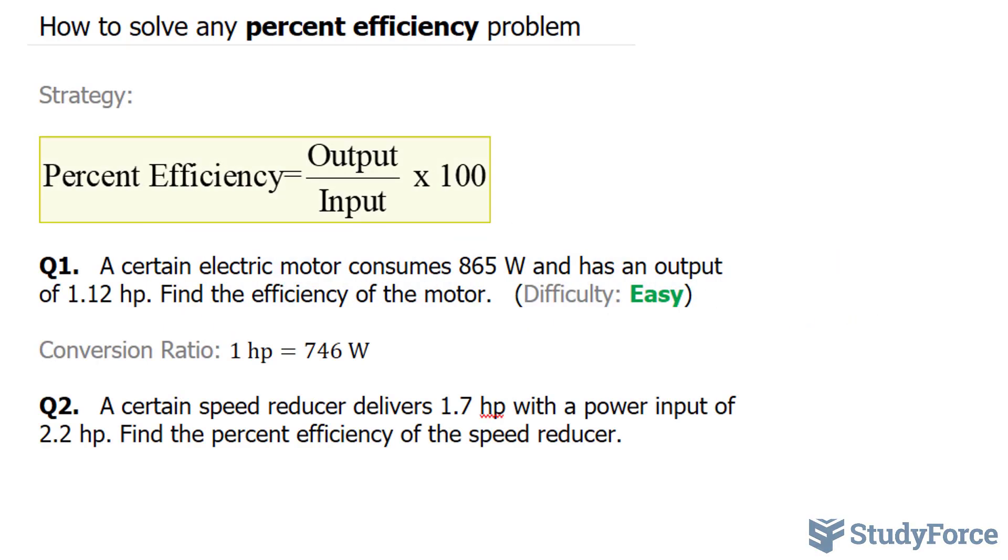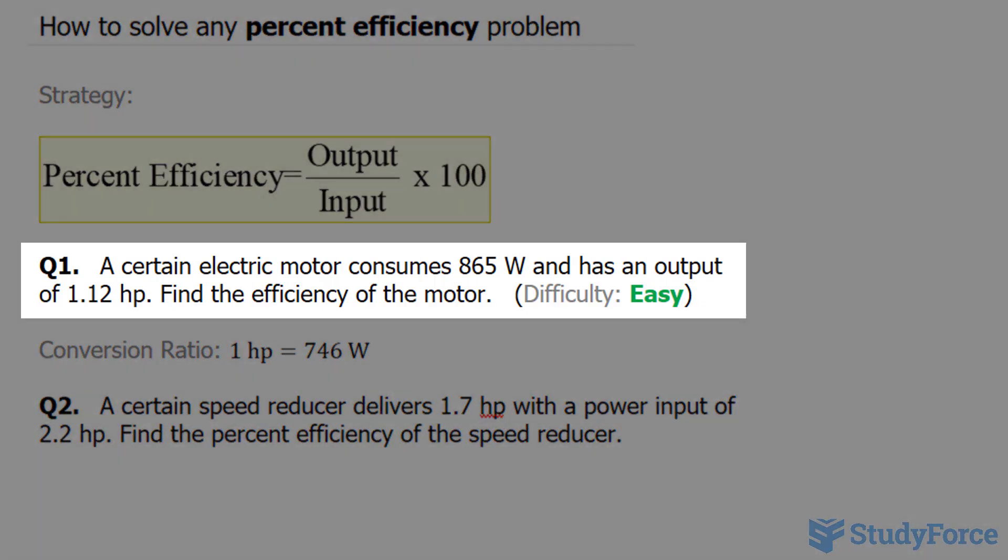In this video, I'll show you how to solve any percent efficiency problem. The first question asks: a certain electric motor consumes 865 watts and has an output of 1.12 horsepower. Find the efficiency of the motor.